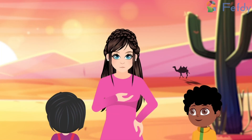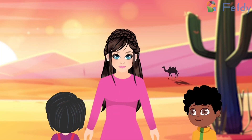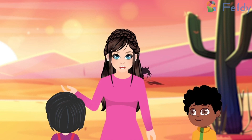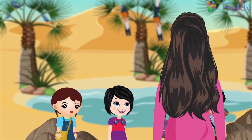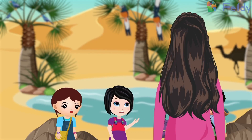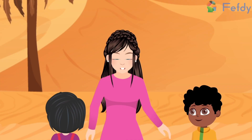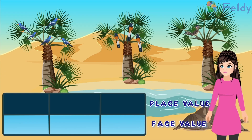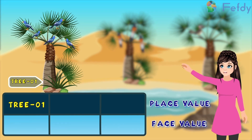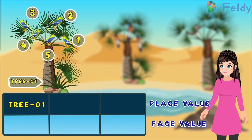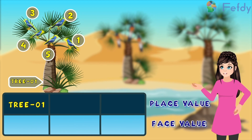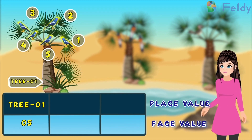Face value — I will also tell you what face value is. Face value is the actual value of a number irrespective of its position. So a number has both face value and place value. Let's take the birds in the trees that we spotted as an example. On tree one, we saw five indigo buntings. That means the place value here is tree one and the face value is the five indigo buntings.